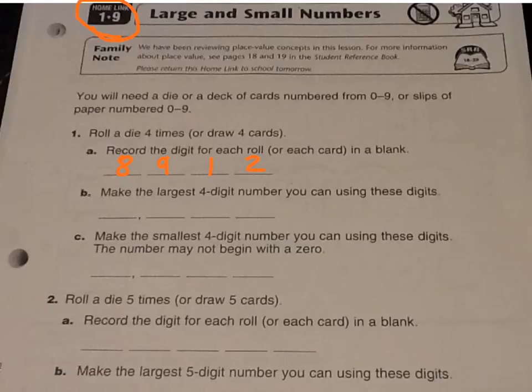Now what is the largest four-digit number I can make? So I have four places to look at: the thousands, hundreds, tens, and ones.